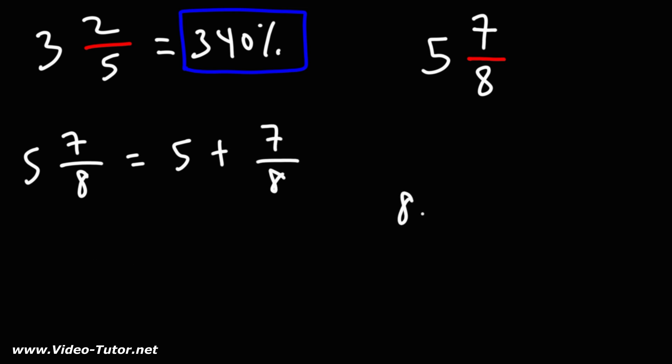Let's do some long division. 8 doesn't go into 7, so let's add a 0 and a decimal point. 8 goes into 70 eight times. 8 times 8 is 64. 70 minus 64 is 6. So 7.0 minus 6.4 is 0.6.